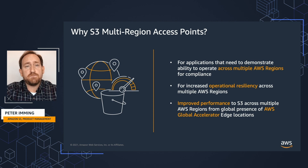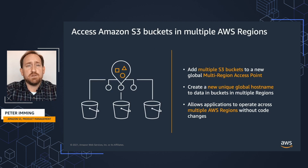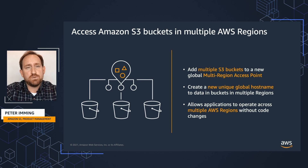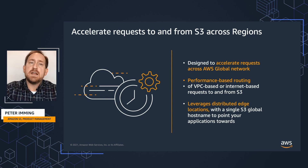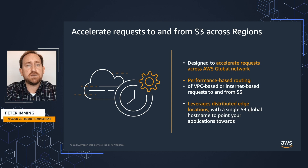We think this is going to be very exciting for customers. Let's take a look at how multiple regions can be brought together under a single global hostname known as a multi-region access point. We have the ability to choose which buckets to include, through a new unique global hostname automatically generated through the multi-region access point setup and configuration. Once this global hostname is created, clients and applications can make requests — reads and writes — that are automatically accelerated onto the AWS Global Accelerator network and routed to the bucket with the lowest latency. These can be either VPC-based or internet-based requests on-ramping to the AWS Global Accelerator network.